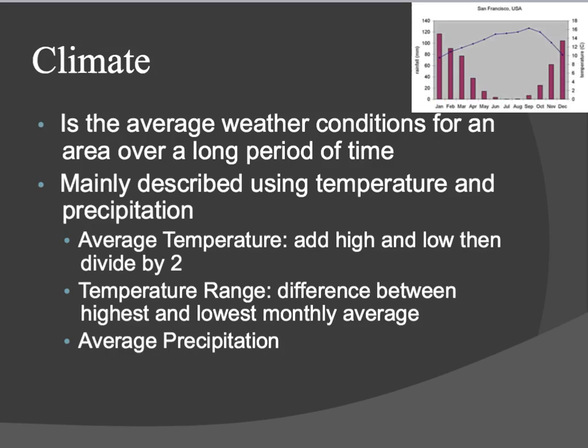Climate is the weather conditions of an area over a long period of time. When we talk about climate, we're mainly talking about temperature and precipitation. What we usually want to know about an area is the average temperature. To get an average, you add up the high and the low and then divide by two. You can find average temperature for the month, for the year, anything like that.